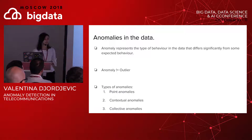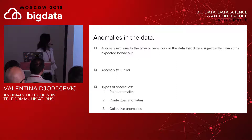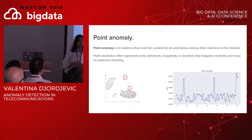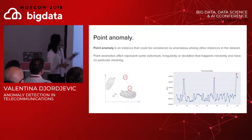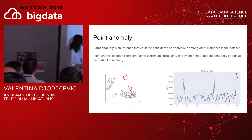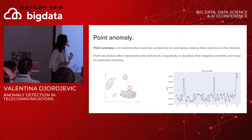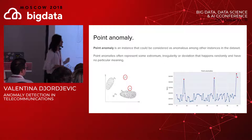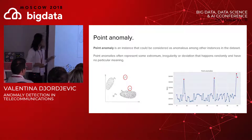There are three basic types of anomalies in the data. The first is point anomalies — a point anomaly represents an instance that could be considered anomalous among all other instances in the data set. It is often some extremum, irregularity, or deviation that happens randomly and has no particular meaning. On the left side you can see instances grouped in the N1 and N2 area, and those two instances that are separated from the rest are point anomalies. In a time series representing sales, those points here are point anomalies because they do not have some seasonality and they deviate from the rest in a significant way.